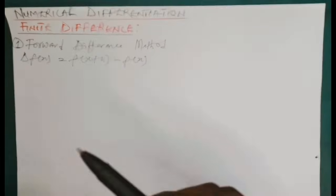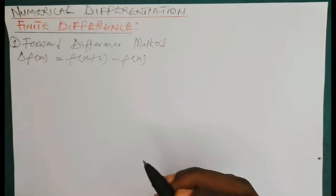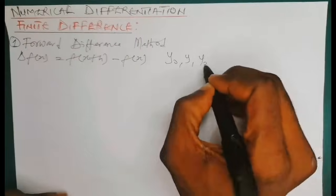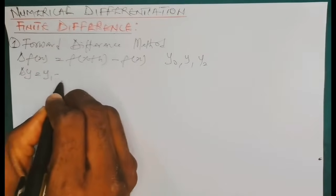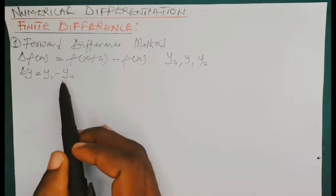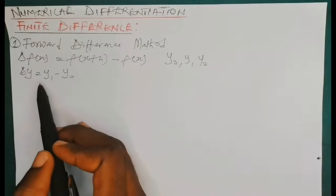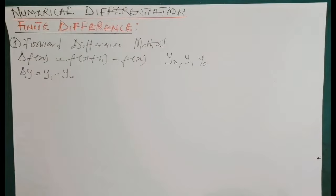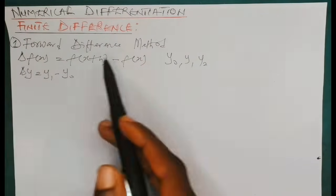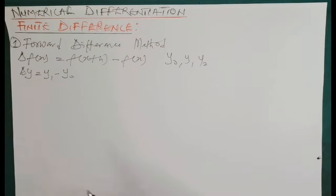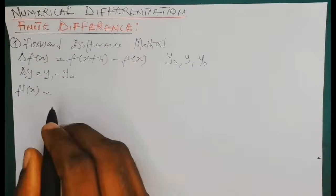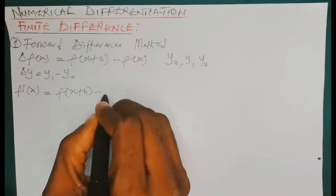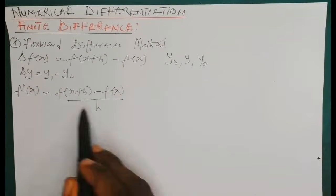For instance, if you're considering points y0, y1, y2, then the change in y is simply y1 minus y0 — using the value at one point and the value at the next point to approximate the derivative. For the first derivative using the forward difference method, the formula is: f′(x) = [f(x + h) − f(x)] / h, where h stands for the interval.